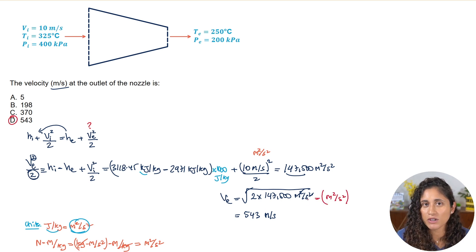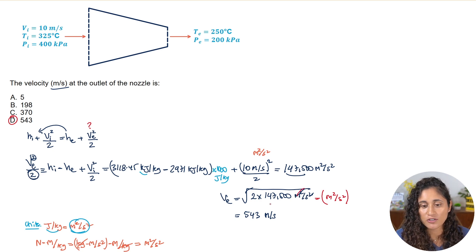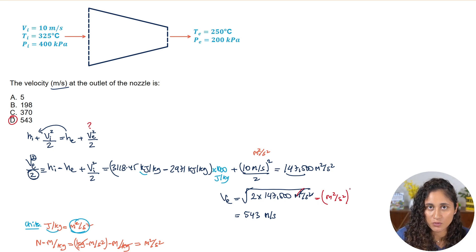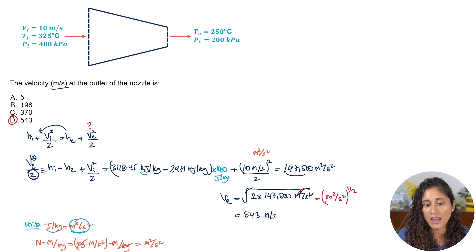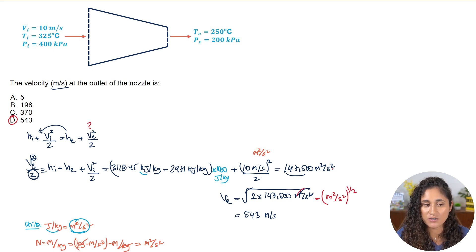Just to clarify: the square here cancels with the square root because a square root is the same as raising to the power of 1/2. So the exponent of 2 times 1/2 equals 1, canceling out — that's why meters and seconds both lose their squares and we're left with m/s.